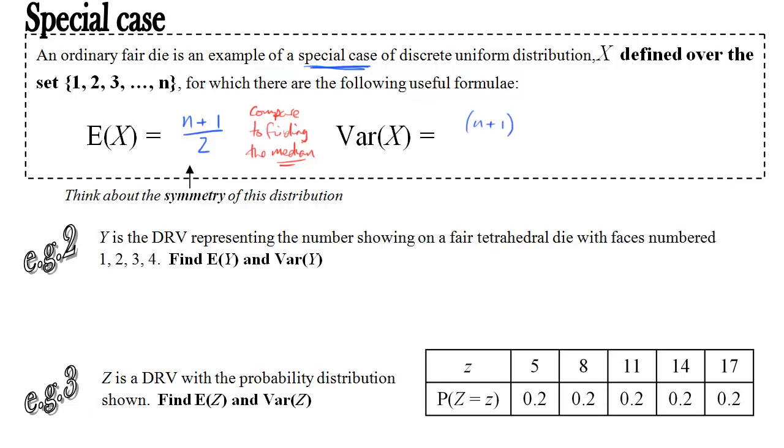And the formula for the variance is n plus 1 times n minus 1 over 12. And because that's the difference of two squares, we can also write that as n squared minus 1 over 12.